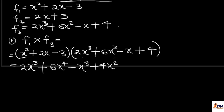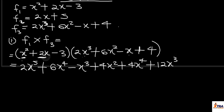We go to the next term: 2x. 2x times 2x cubed — x times x cubed is x to the power 4, so we have 4x to the power 4. Then 2x times 6x squared gives us 12x cubed. 2x times minus x gives us minus 2x squared. Then 2x times 4 gives us plus 8x.